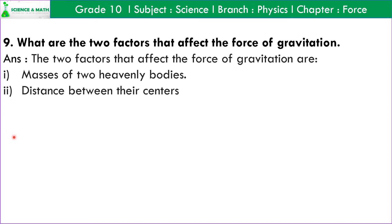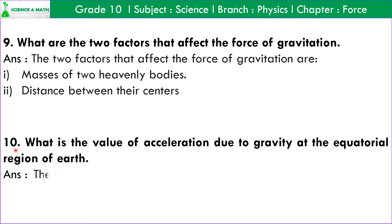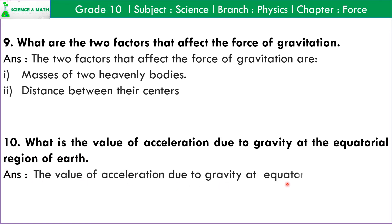Question number 10: What is the value of acceleration due to gravity at the equatorial region of earth? Answer: The value of acceleration due to gravity at the equatorial region of earth is 9.78 meter per second square.